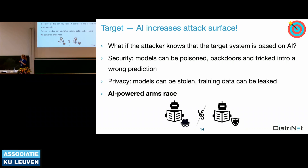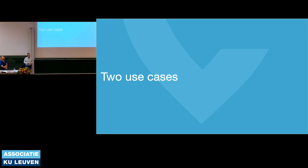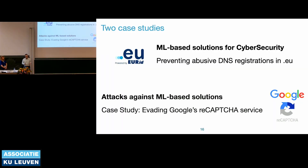We will now have a few examples. The next steps illustrate what these cases look like and how ML techniques apply. We focus on two successful stories from our lab. The first shows how we use ML to create a security solution in the domain of DNS registrations, joint work with EURid. In the second case study, we take a step back and try to see how we can evade a system using ML — specifically, we try to attack and evade Google's reCAPTCHA service.